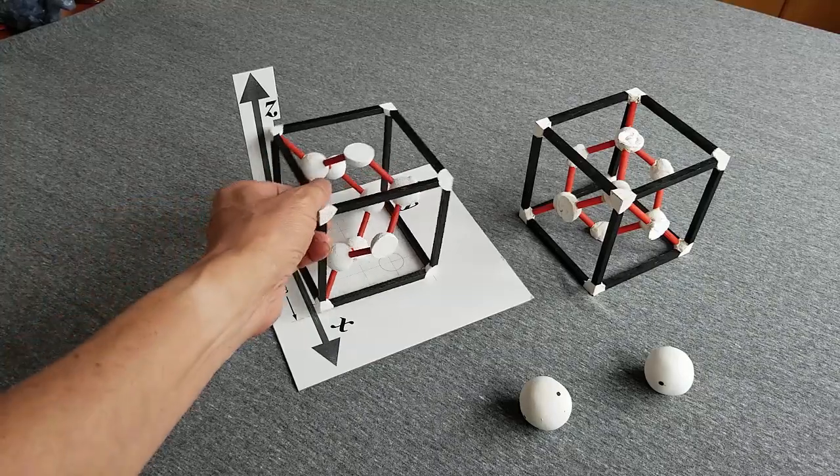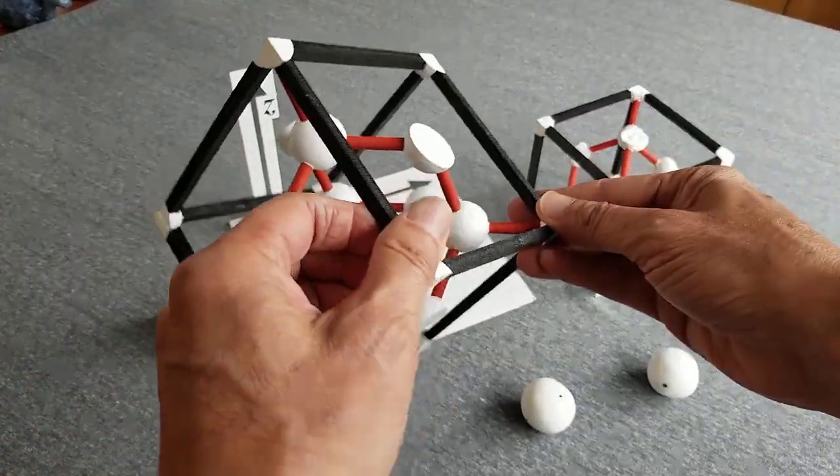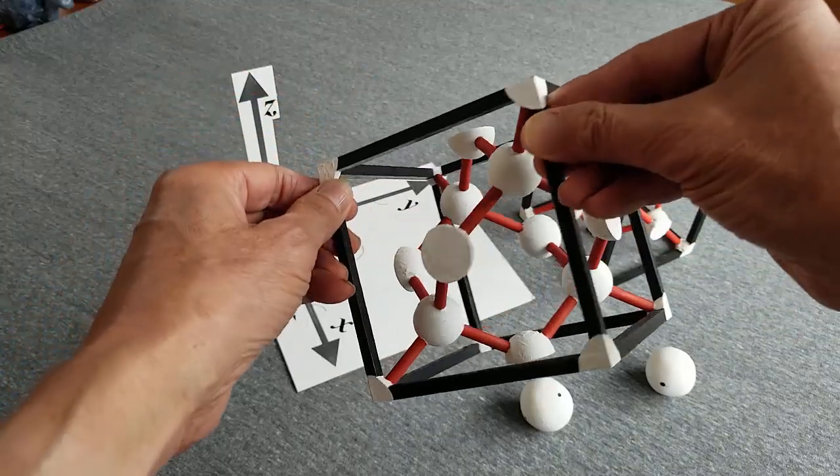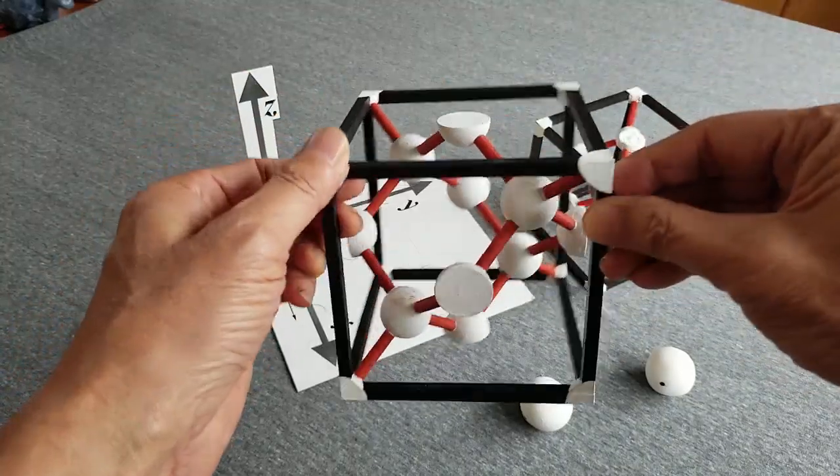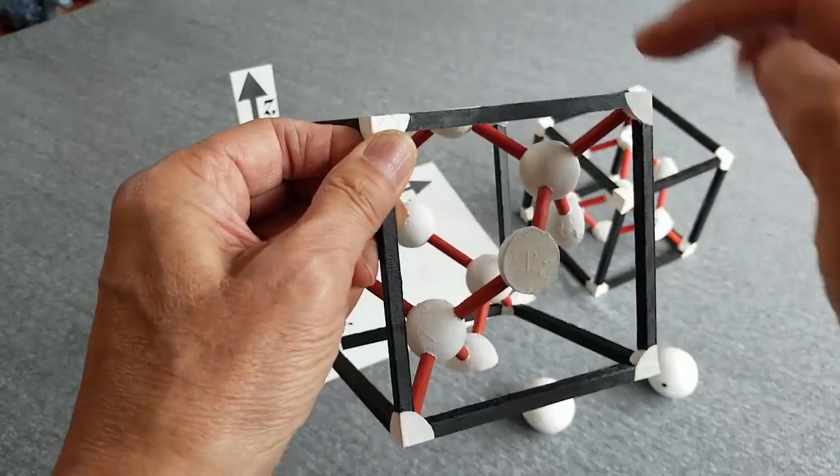This ball-and-stick model shows the arrangement of atoms in a silicon crystal. Each atom is connected to four others in a tetrahedral pattern.